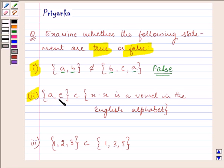It says {a, e} is a subset of {x : x is a vowel in the English alphabet}. Now let us think of all the vowels, that is a, e, i, o, u.